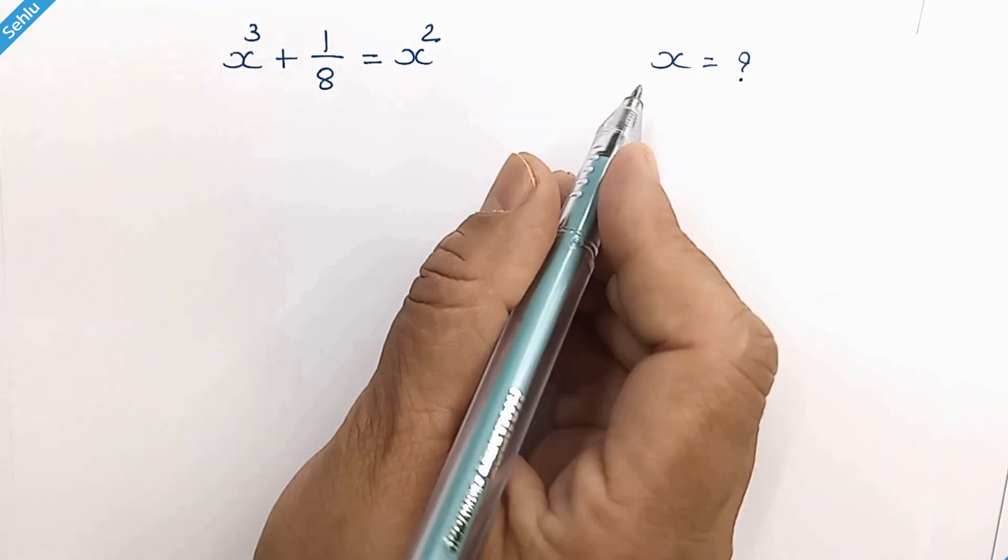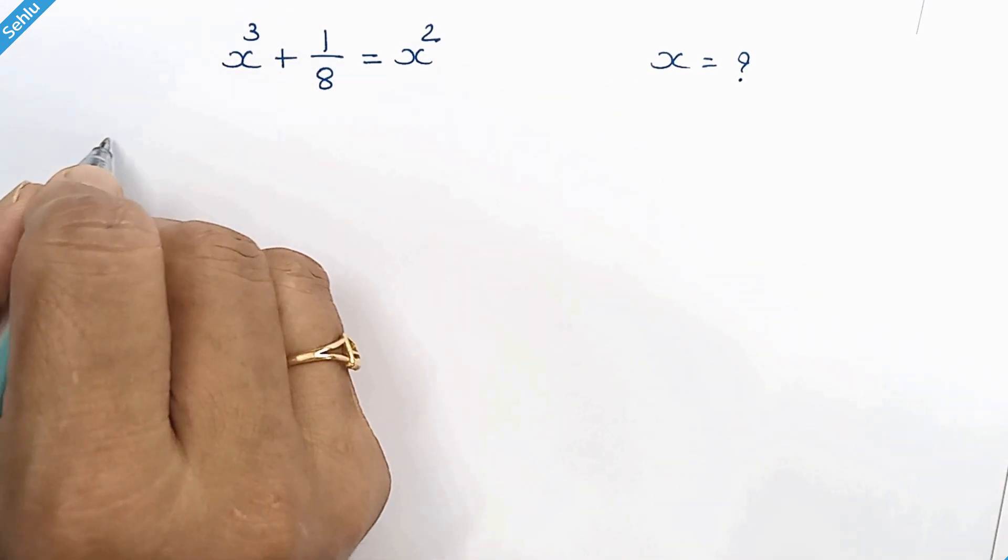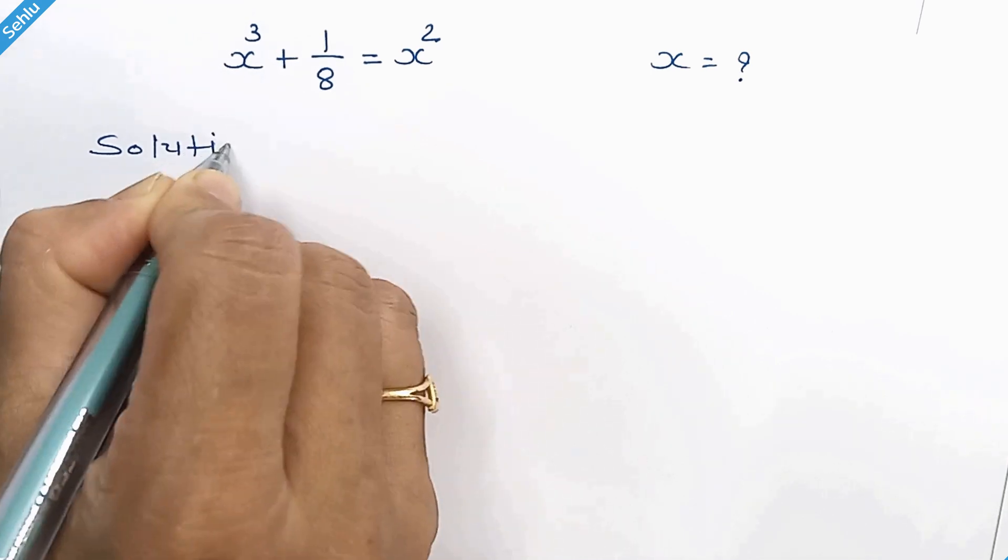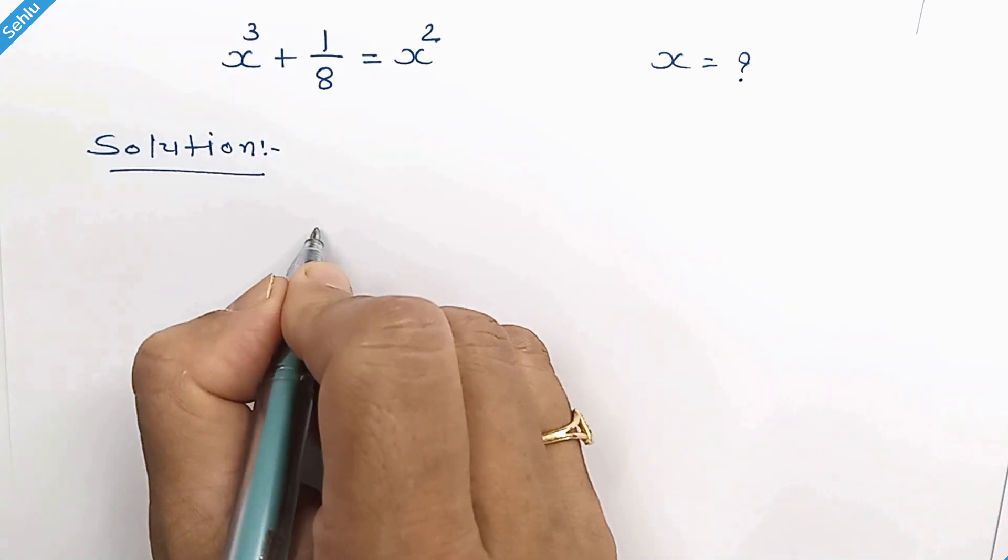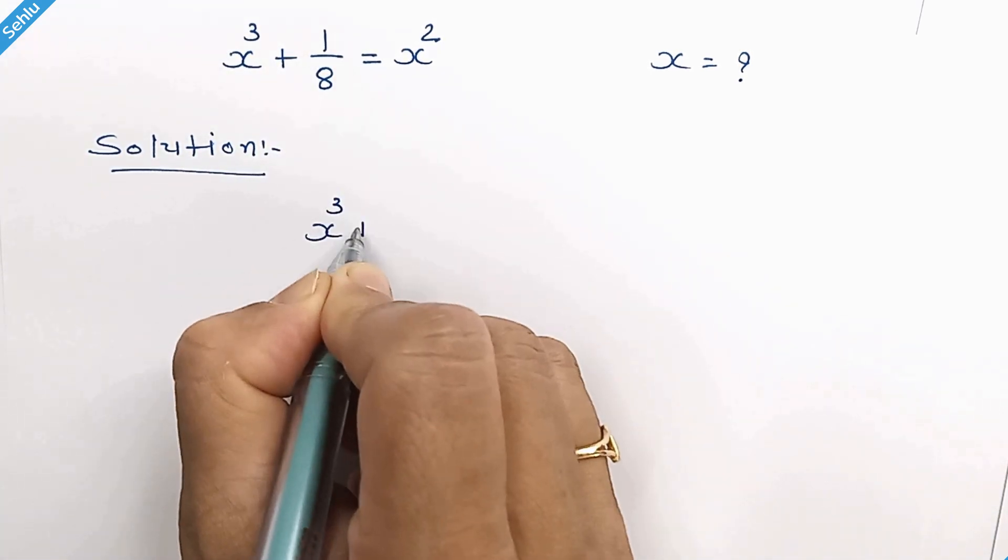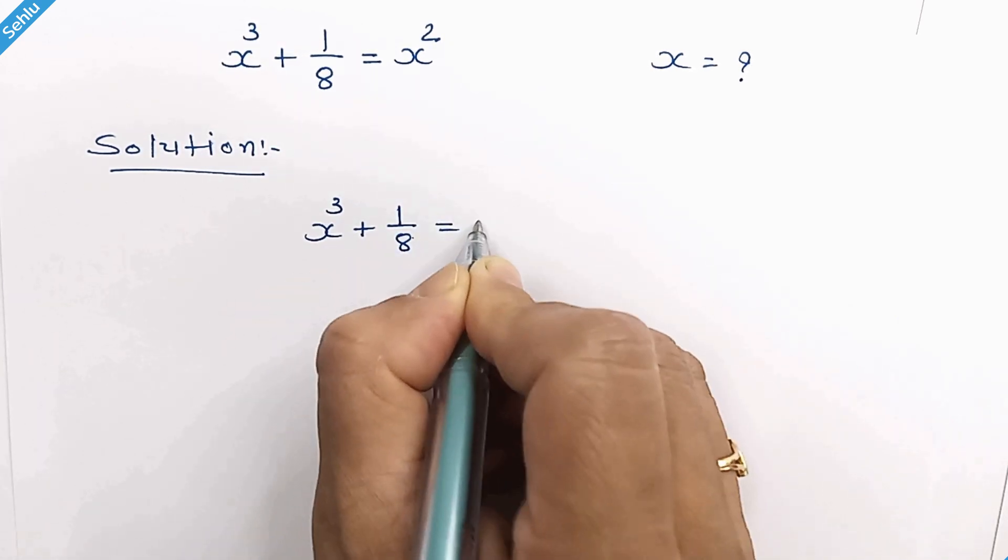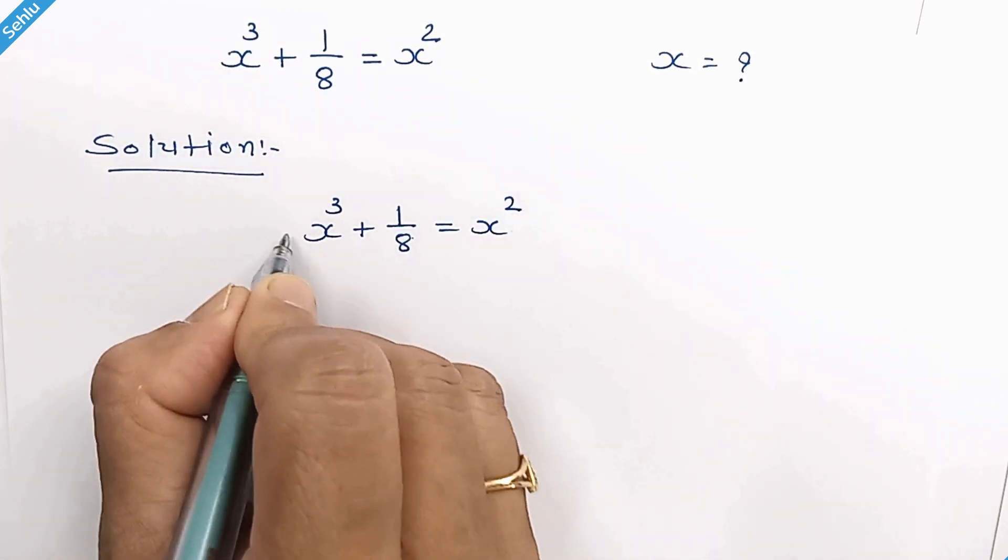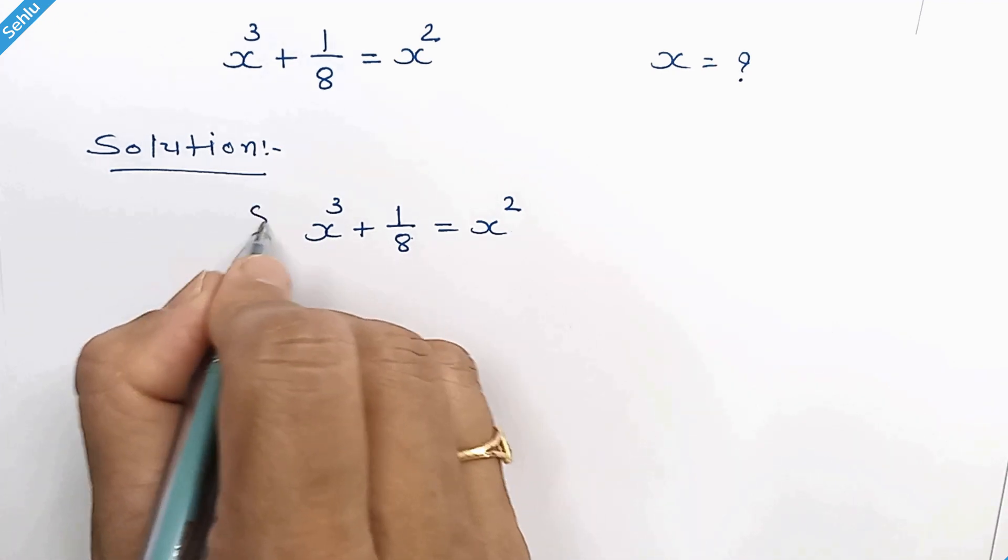Hello friends, how do we solve this? Let's see. The question is x cube plus 1 over 8 is equal to x square. Multiplying this term with 8 over 8.